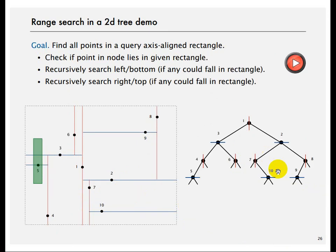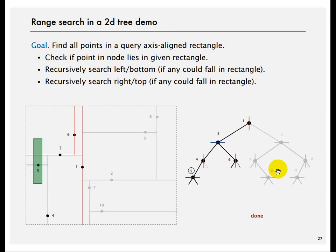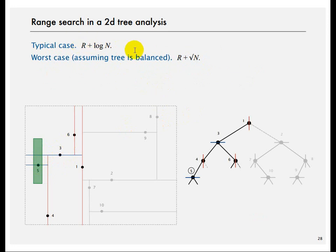For range search in a 2D tree: check if a point lies in the query rectangle. If the rectangle is entirely to the left of a node, ignore the right subtree and recurse left. Recursively search the relevant half-planes. The typical case is O(r + log n), but if the tree is balanced it may be O(r + √n) because you may end up visiting that many nodes.